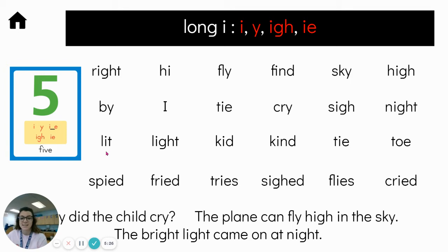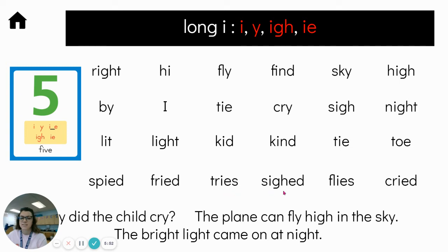Third line: light. Kind. Tie. Toe. Fourth line: spied. Fried. Tries. Sigh. Flies. Cried.